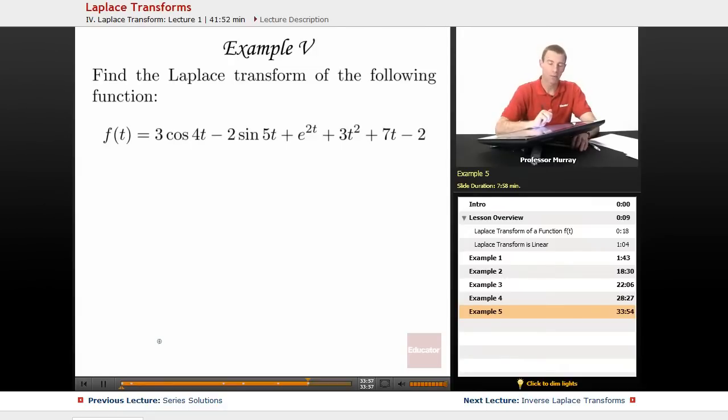Final example, we have a very complicated function. f of t is 3 cosine 4t minus 2 sine 5t plus e to the 2t plus 3t squared plus 7t minus 2.